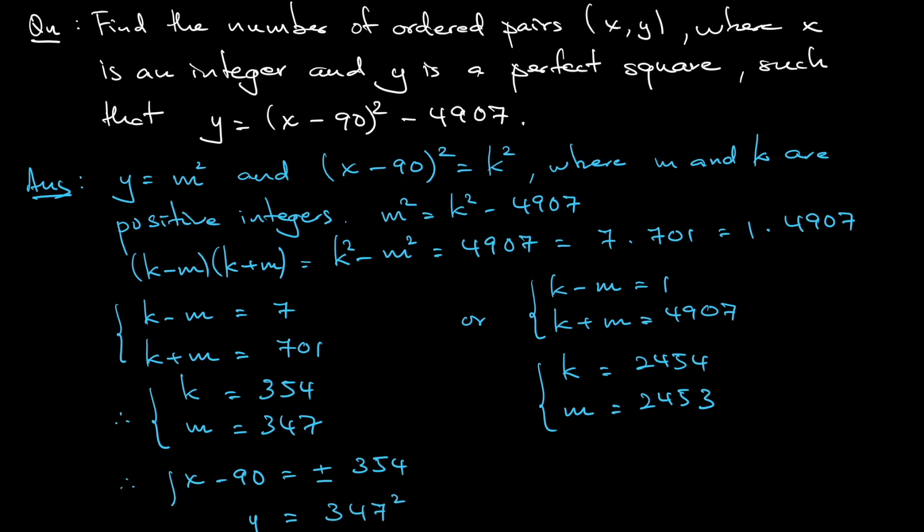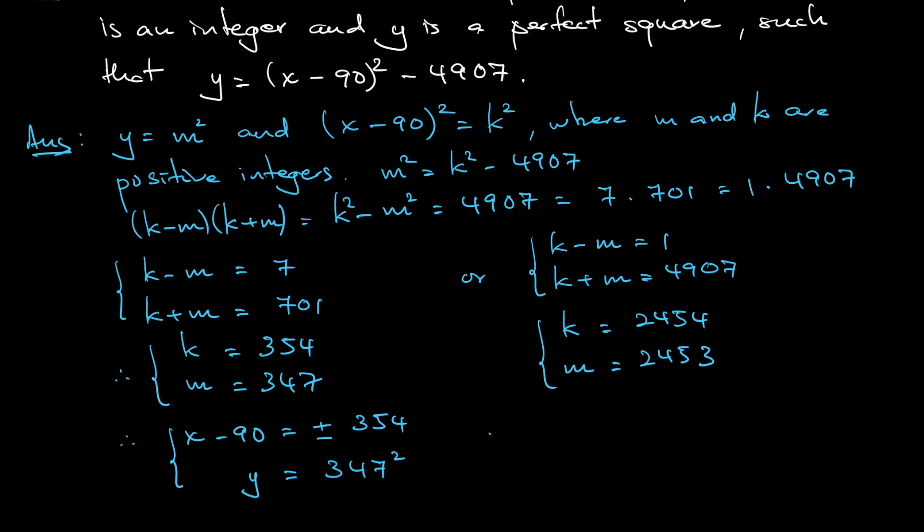And my y is just m square, so it's just 347 square. Similarly here, x minus 90 is equal to plus or minus k, so plus or minus 2453, and y is m square, so it would be 2453 square.